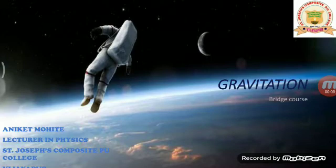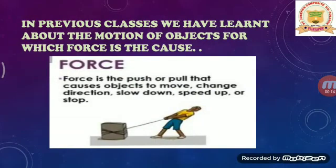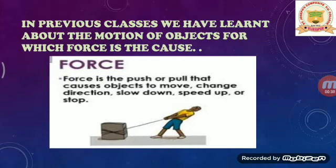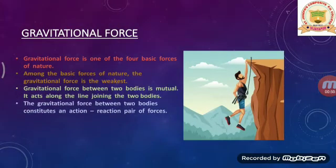Hello students, welcome to the bridge course. In this video we will discuss gravitation. In previous classes we have already learned about the motion of objects, for example a ball thrown in the air, a moving car, and the moon orbiting around the earth. The cause for motion is force. Force is the push or pull that causes an object to move, change direction, slow down, speed up, or stop. Now let's learn about gravitational force.